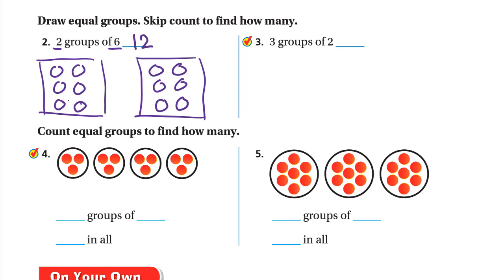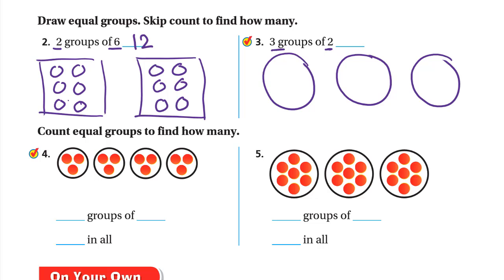Three groups of two: we need three groups, each with two. One, two; one, two; one, two. We have three groups with two circles in each. Skip counting: two, four, six. Three groups of two equals six.